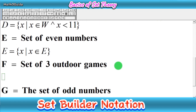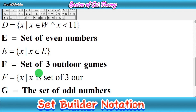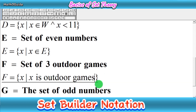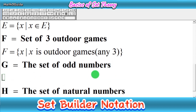Next we have set F, which is equal to the set of outdoor games. Write X such that — since we have no specific mathematical name for this set — X such that X is a set of outdoor games. We have three outdoor games, so you can write 'outdoor games' and note that any three should be listed. You can write X such that X is an outdoor game, and in brackets write 'any three', because we need only three games.